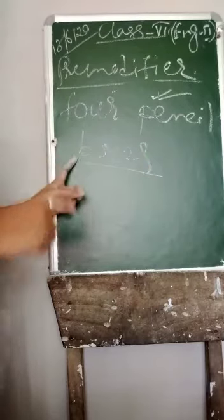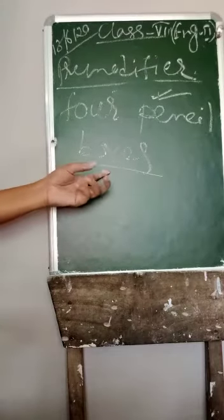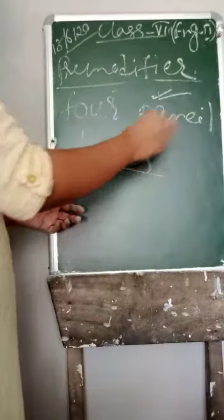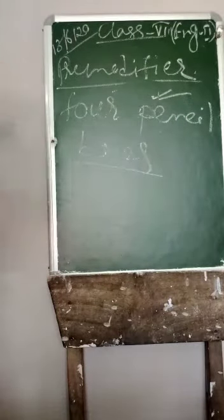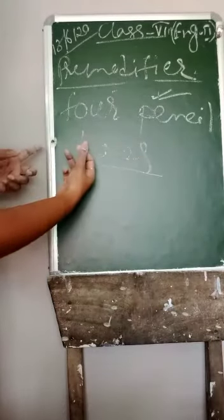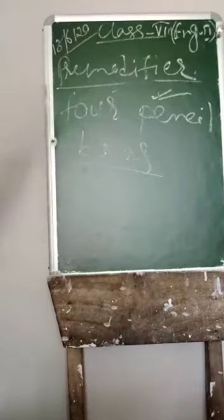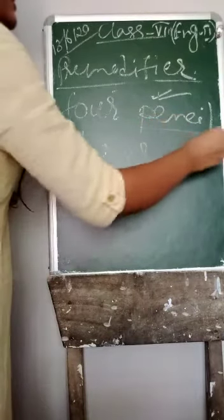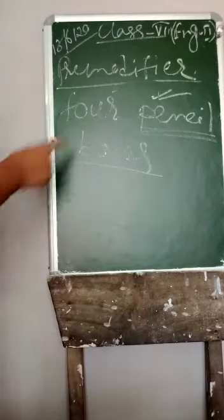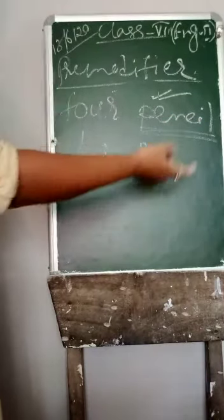In 'four pencil boxes,' before the main noun 'boxes,' we have the word 'pencil.' So 'pencil' is the pre-modifier. Pre means before, modify means to change a little. So the word before the noun is the pre-modifier. Since 'boxes' is in plural form, the pre-modifier 'pencil' will always be singular. We cannot write 'four pencils boxes' — we have to write 'four pencil boxes.'